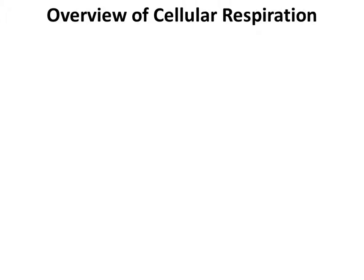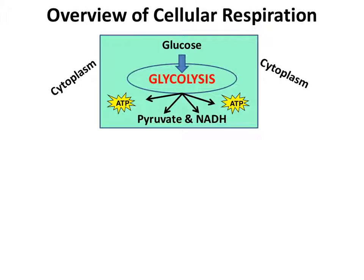Let's begin at the beginning of cellular respiration: glycolysis. This box illustrates the big picture of glycolysis. It shows you where glycolysis occurs — that's the cytoplasm. It shows that it begins with a molecule of glucose, which undergoes glycolysis and produces three main products: ATP, pyruvic acid or pyruvate, and also NADH.